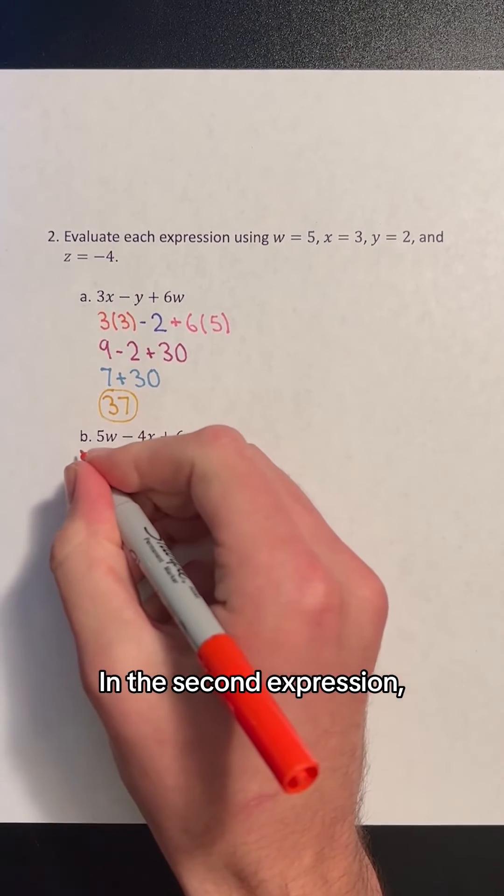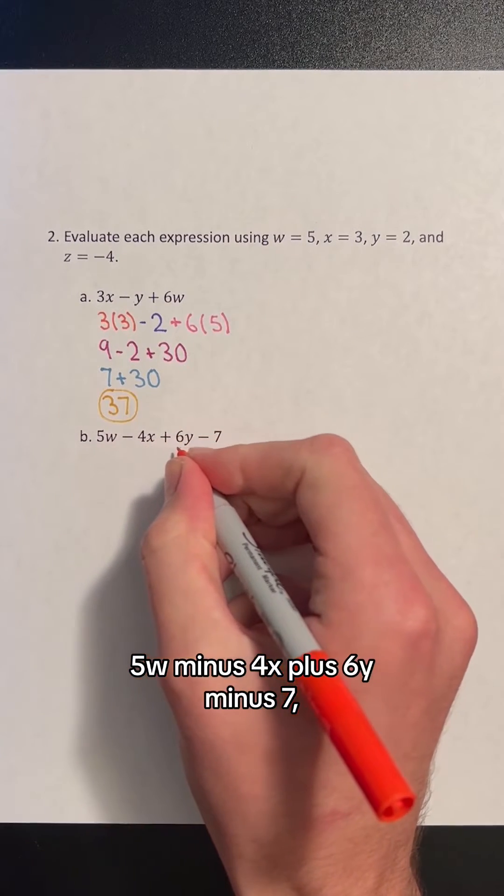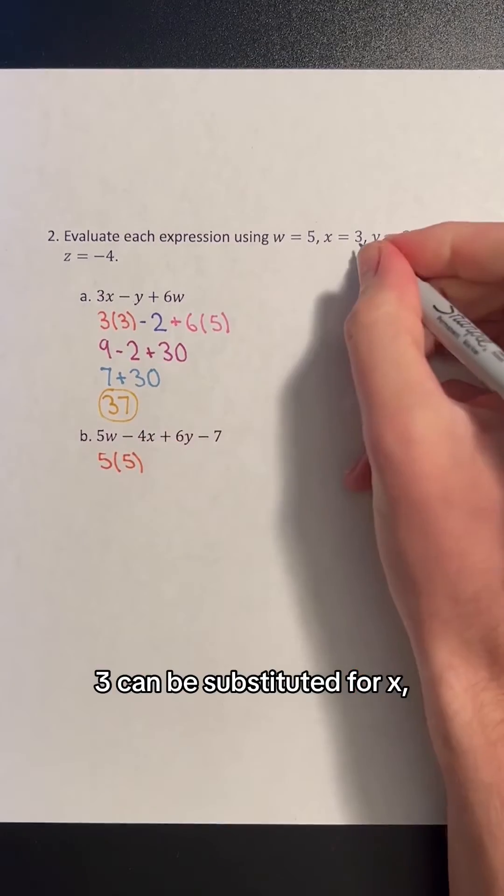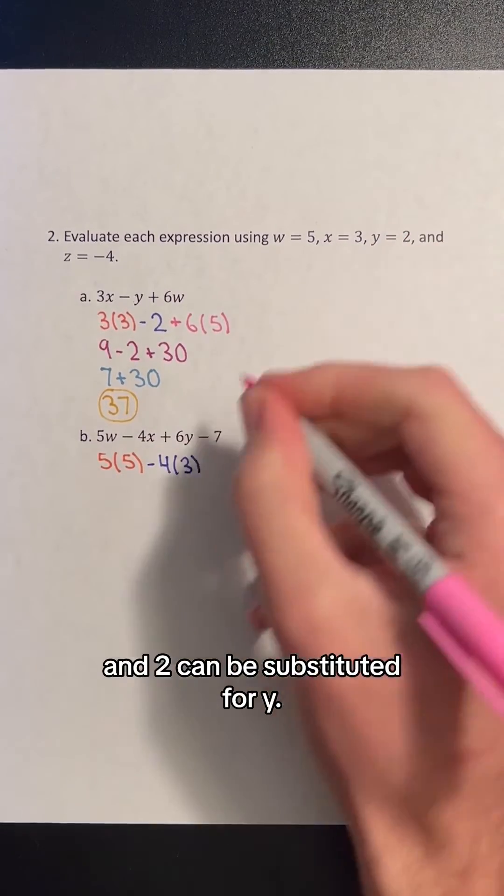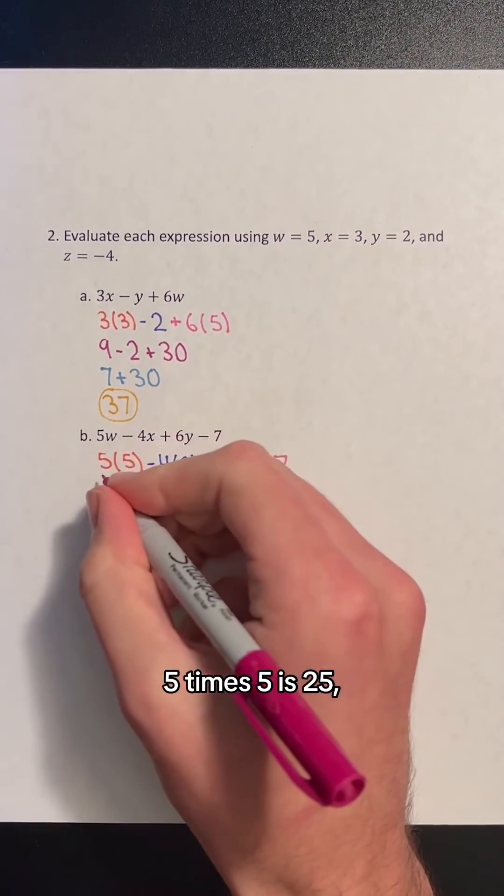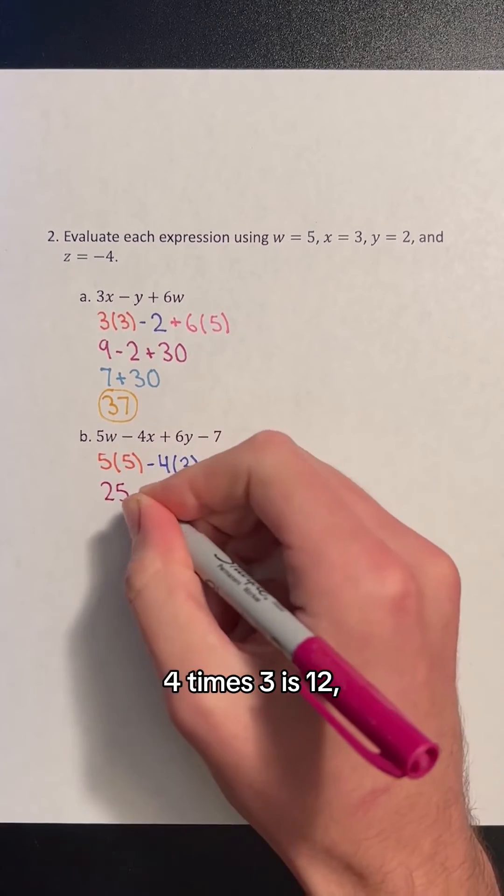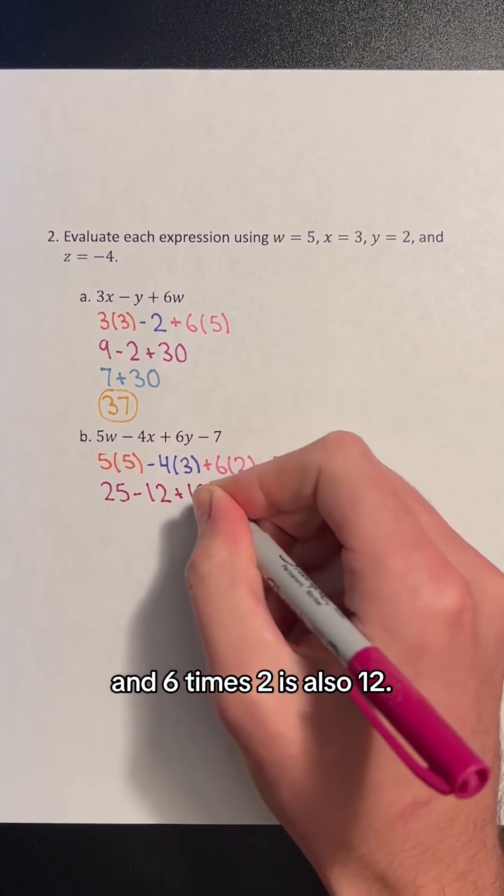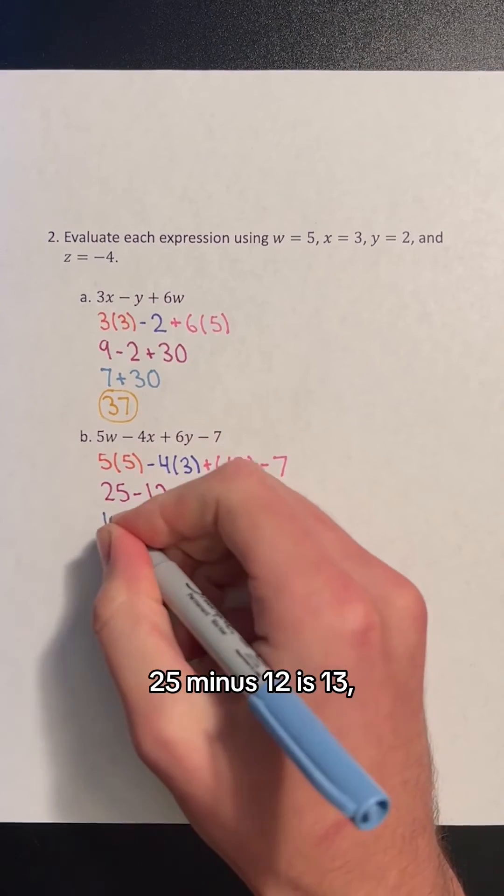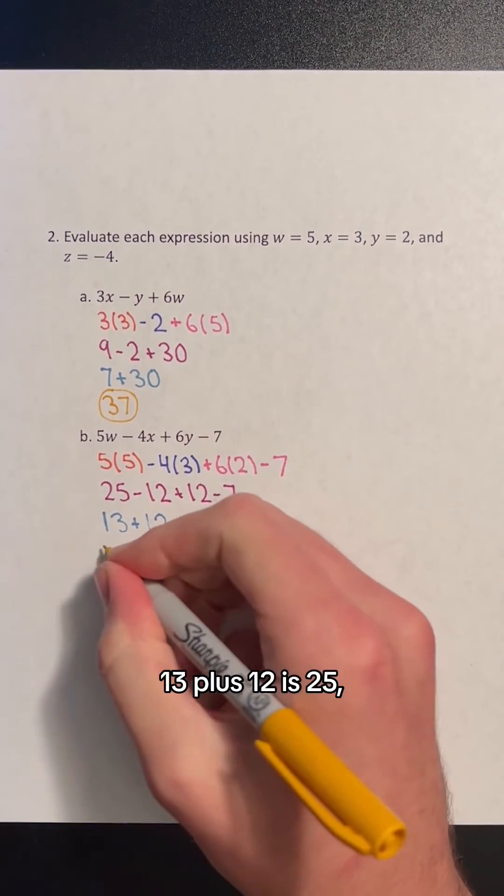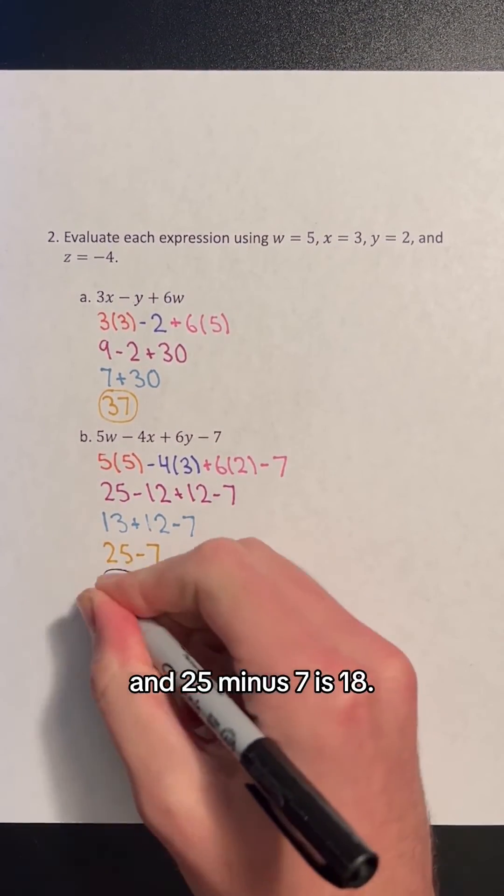In the second expression, 5w minus 4x plus 6y minus 7, 5 can be substituted for w, 3 can be substituted for x, and 2 can be substituted for y. 5 times 5 is 25, 4 times 3 is 12, and 6 times 2 is also 12. 25 minus 12 is 13, 13 plus 12 is 25, and 25 minus 7 is 18.